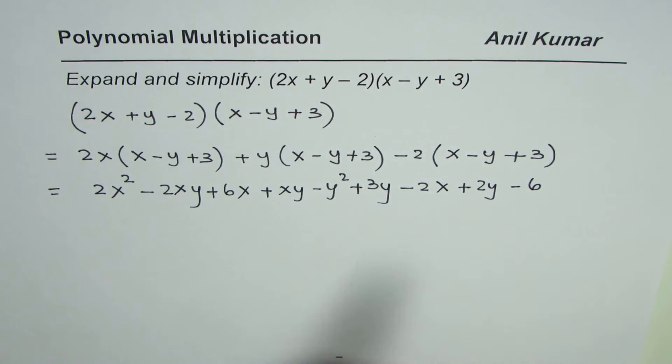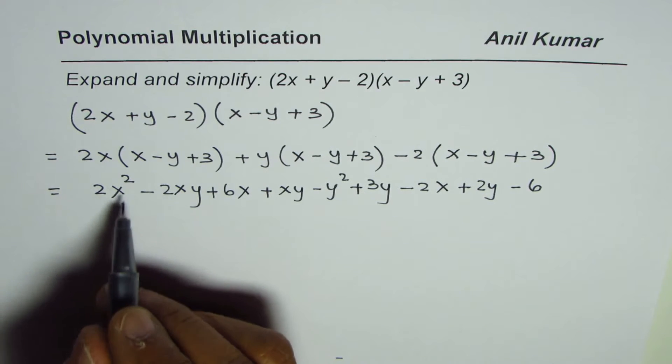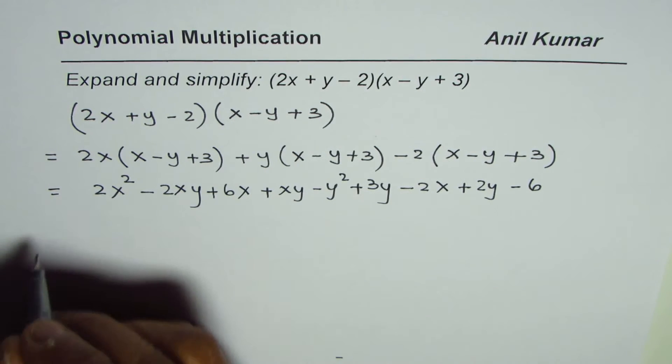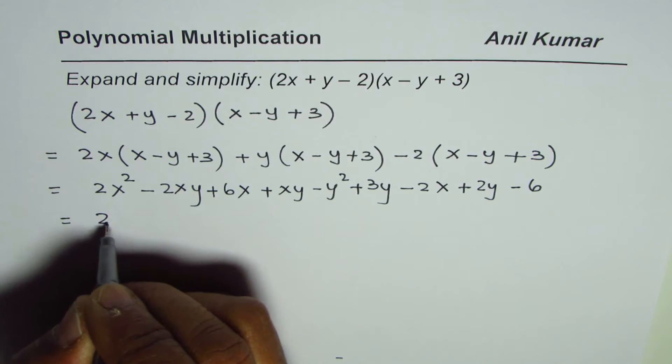At this stage, we should combine the like terms. Let's look for like terms and combine them. 2x² - we do not have any other x² terms, so we have 2x².